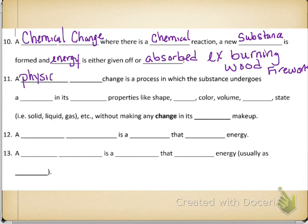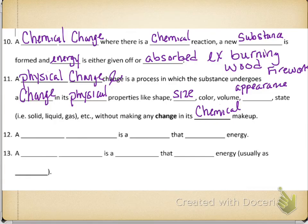Our next term then is going to be a physical change. And I messed up here and wrote the word change twice. One in print and one typed. So just take that change out of there. A physical change is a process in which the substance undergoes a change in its physical properties, like the shape, the size, the color, the volume, the appearance, its state, like liquid, solid, or gas, without making any changes in its chemical makeup.